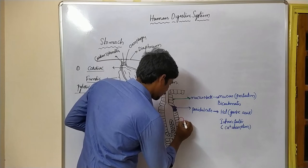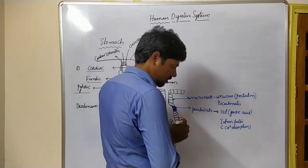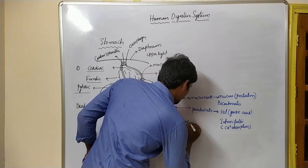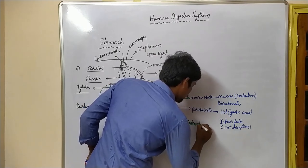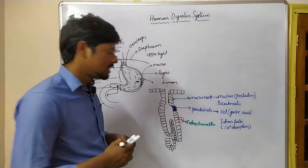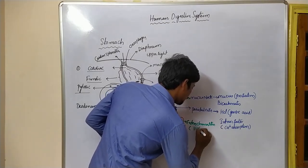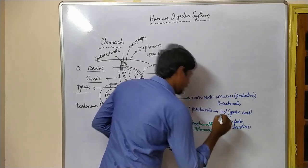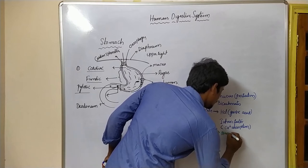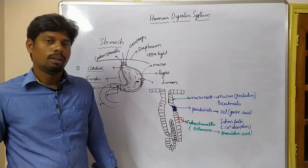Next to the parietal cells, there are enterochromaffin cells. These enterochromaffin cells are essential for the production of histamines. Histamines are essential for the stimulation of acid production.